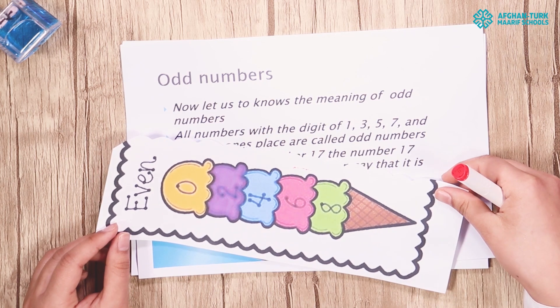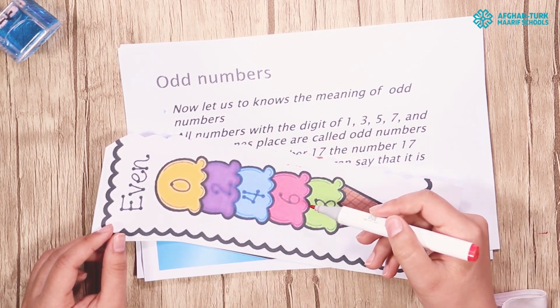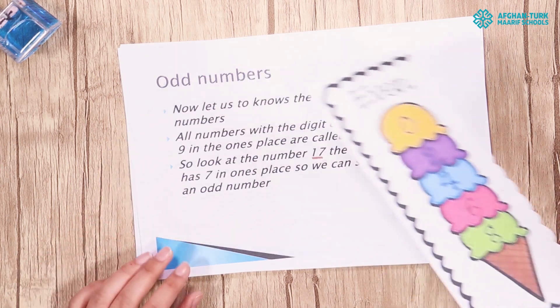Even numbers also we should write like this: 0, 2, 4, 6, and the last one is 8.